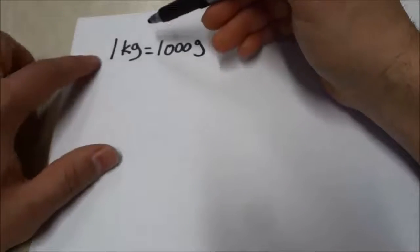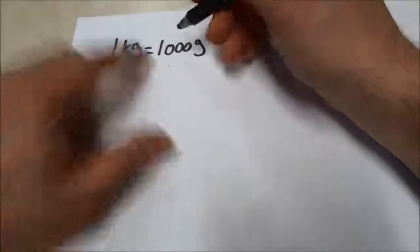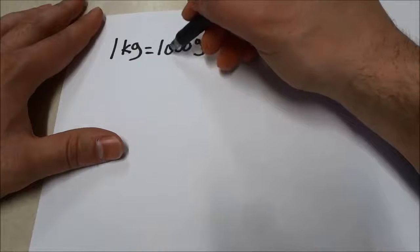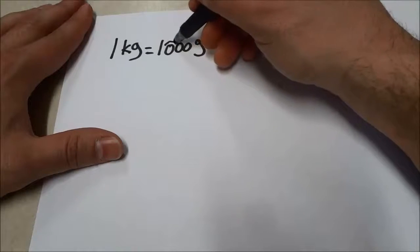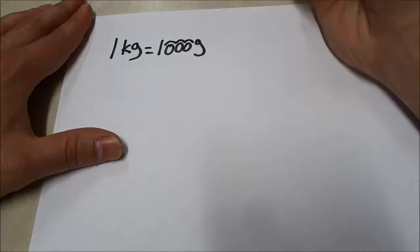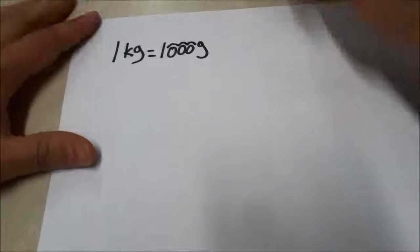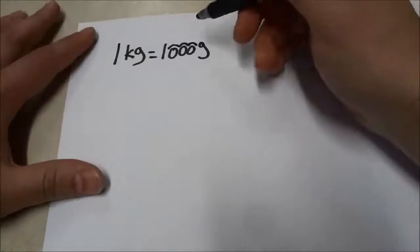So that means that in every kilogram there are 1,000 grams. Now if you take a look at the 1,000, you'll see that there are three zeros. One, two, three zeros. And we're just going to pay attention to that number three. There are three zeros.